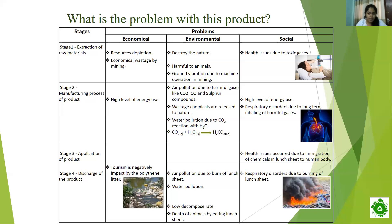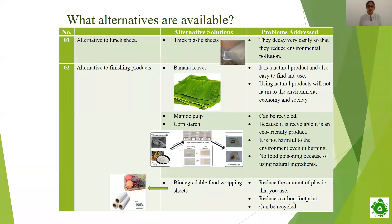I will now pass this presentation to Tadushi. I am Leonar at Sri TASD. Let's see what alternatives are available for lunch sheets. As an alternative, we can use thick plastic sheets, which decay more easily and reduce environmental pollution. Banana leaves, manioc pulp, cornstarch, and biodegradable fruit wrapping sheets are some alternatives. Banana leaves are natural, easy to find and use, and will not harm the environment, economy or society.